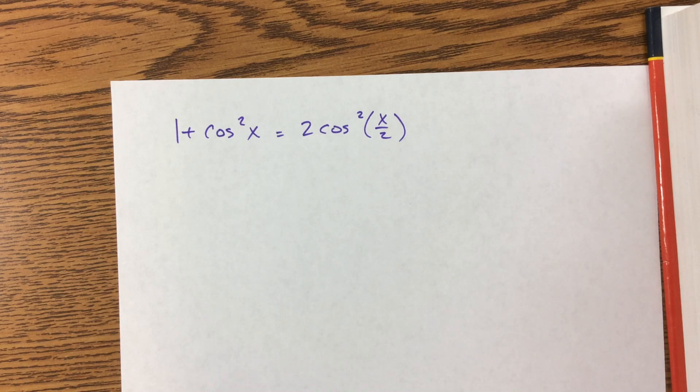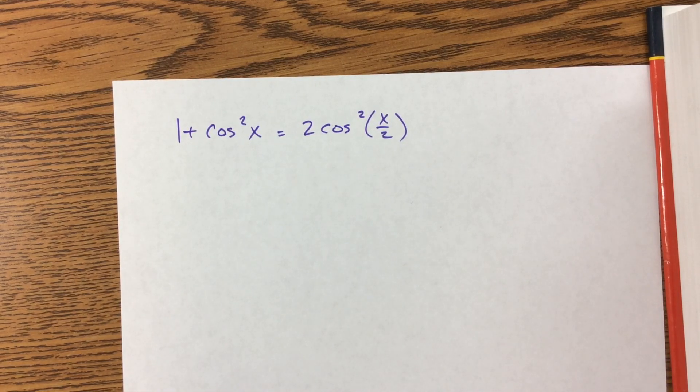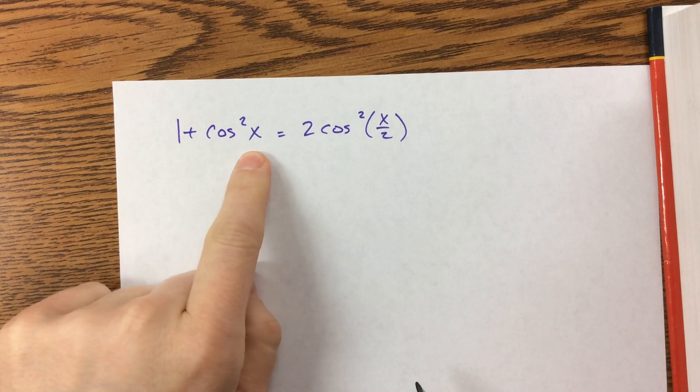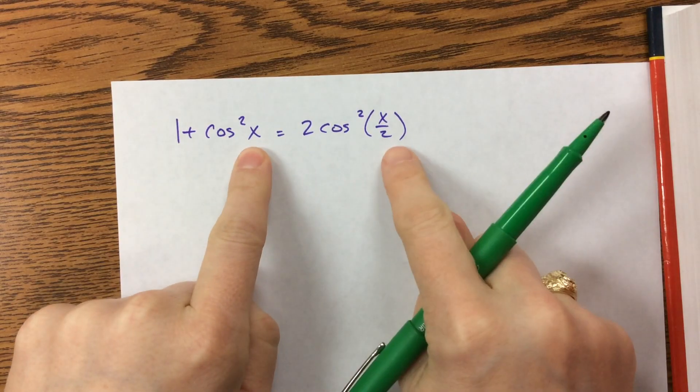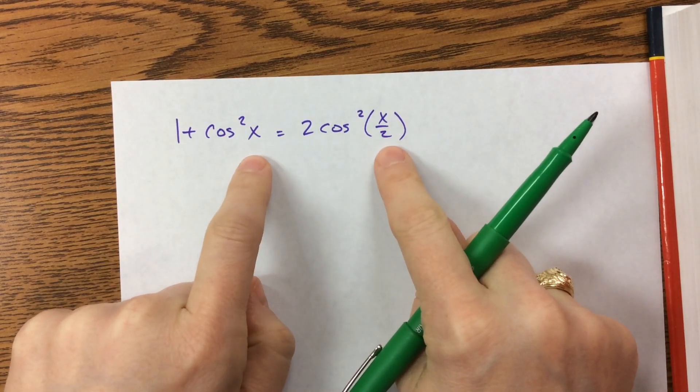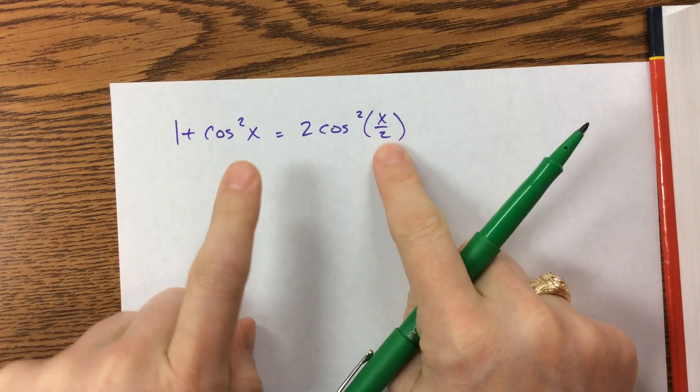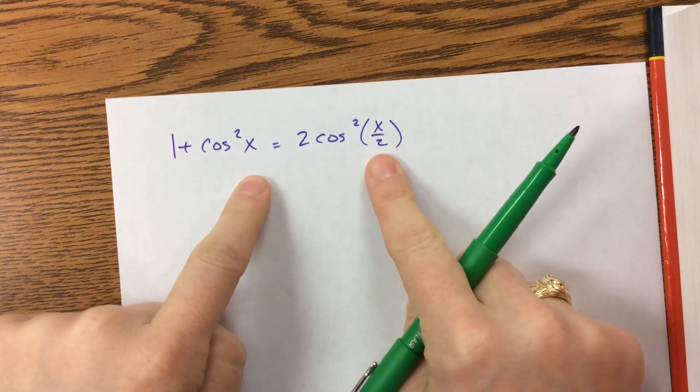Another example of solving a tricky equation looks something like this. 1 plus cosine squared equals 2 cosine squared. Oh, did you notice when I said that, that was wrong? I didn't read out my variable, and now you can see how important it is to not lose your variable, because they're different, which is kind of the interesting part of this problem.